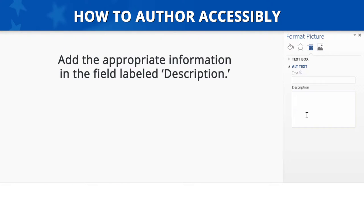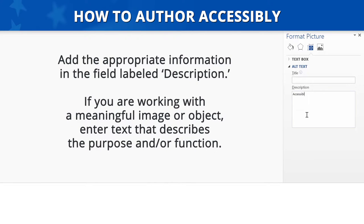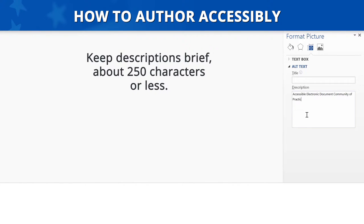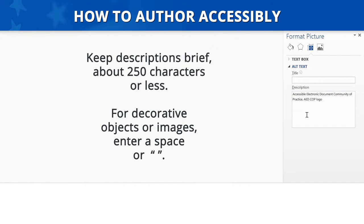Add the appropriate information in the field labeled Description. If you are working with a meaningful image or object, enter text that describes the purpose and/or function. Keep your description brief — it should be about 250 characters or less. If you are working with a decorative object or image, enter a space or double quote space double quote. After typing the appropriate text, click on the Close button.